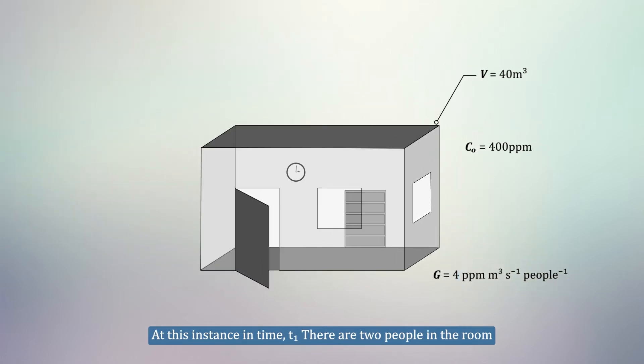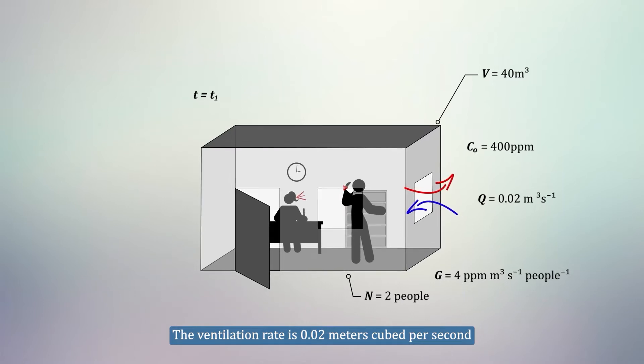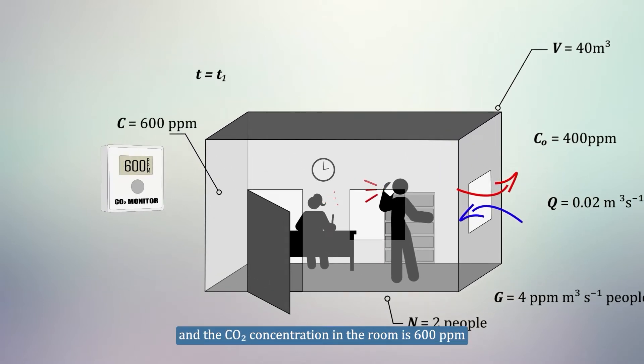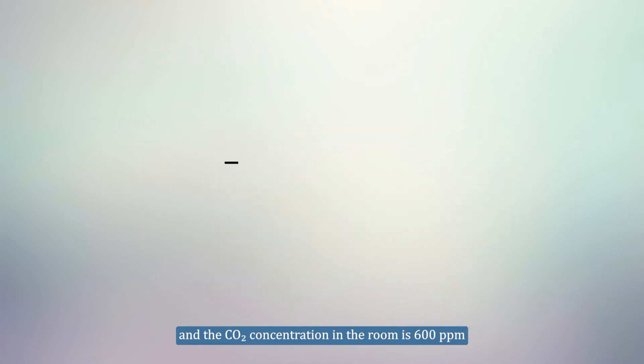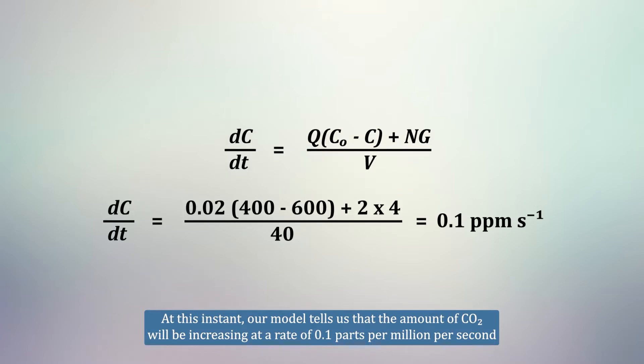At this instant in time, T1, there are two people in the room. The ventilation rate is 0.02 metres cubed per second, and the CO2 concentration in the room is 600 ppm. At this instant, our model tells us that the amount of CO2 will be increasing at a rate of 0.1 parts per million per second.